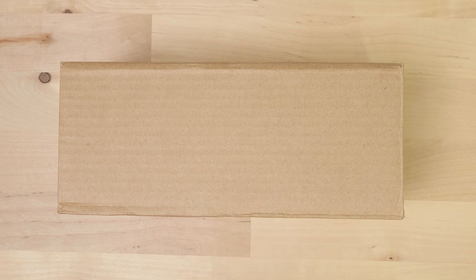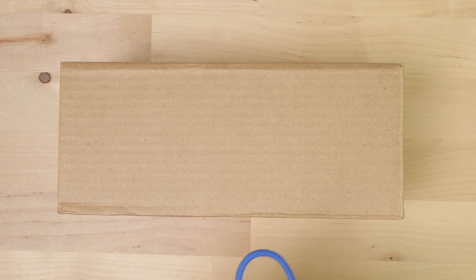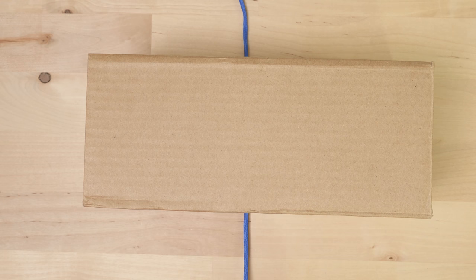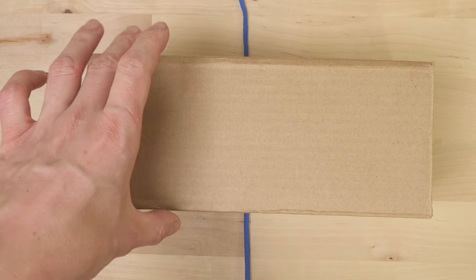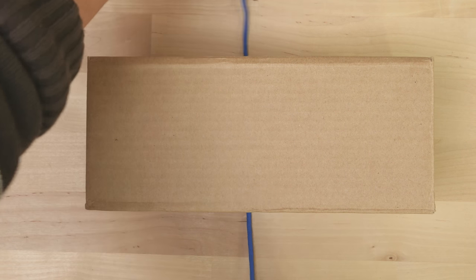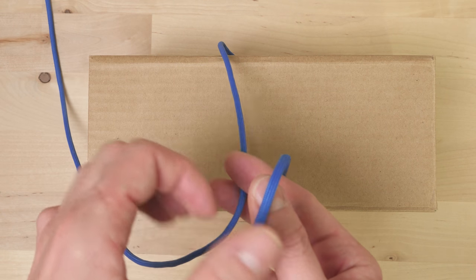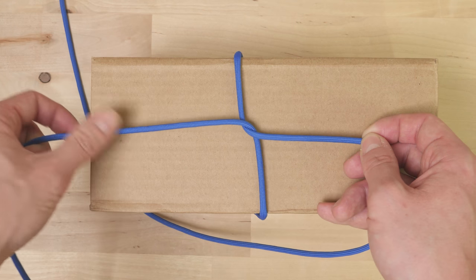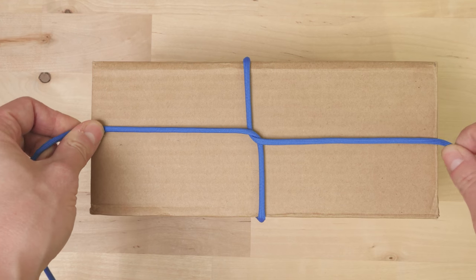To lash this package, I'm going to take some cordage and place it under the package at about the center point. Then I'm going to bring the two ends up and cross them in order to create a hatch. Something like this.